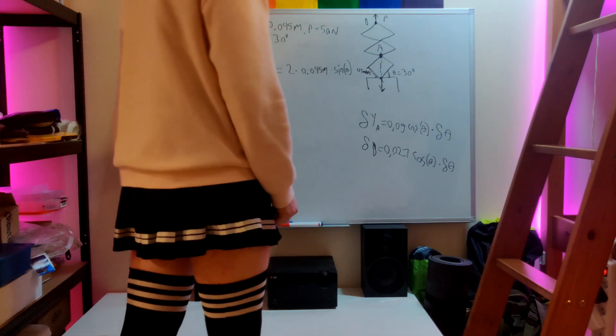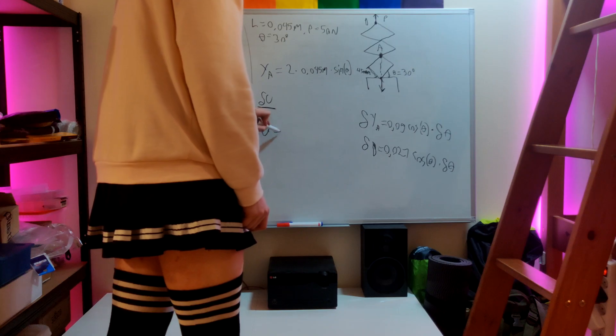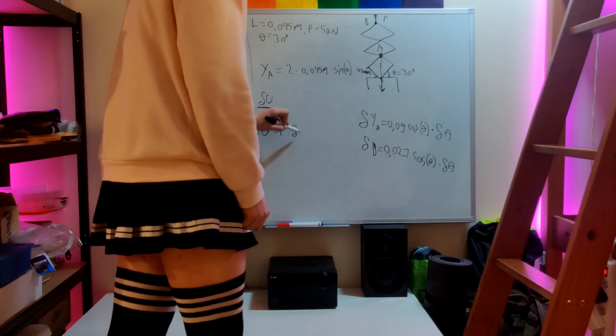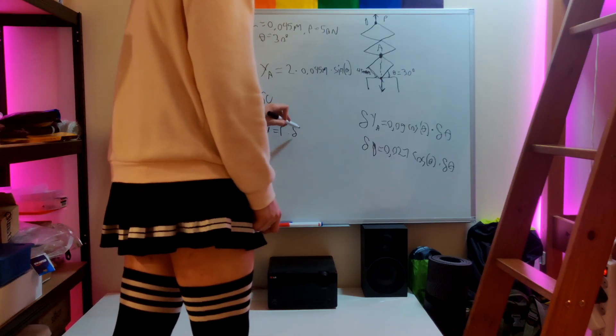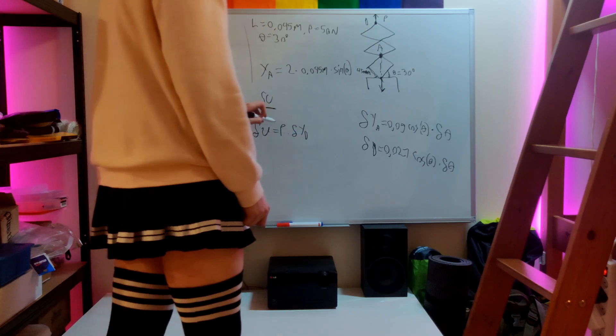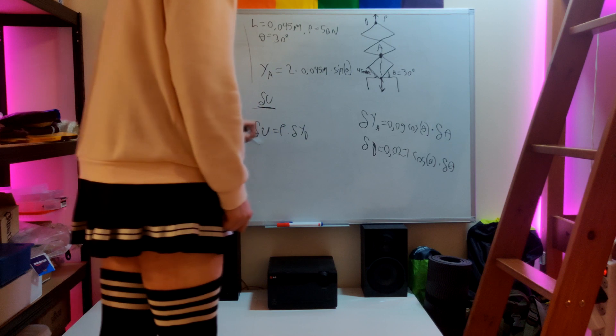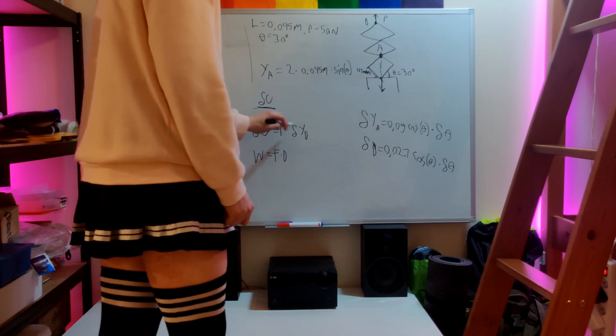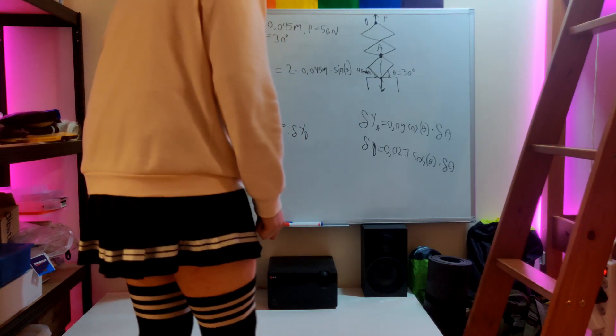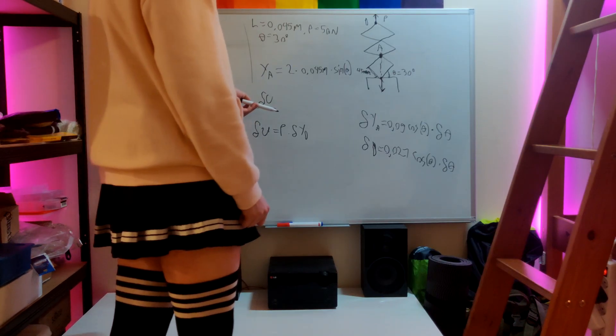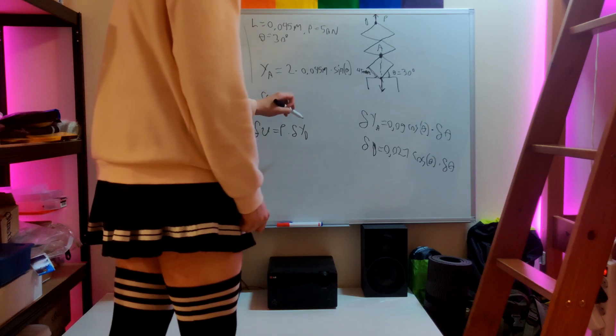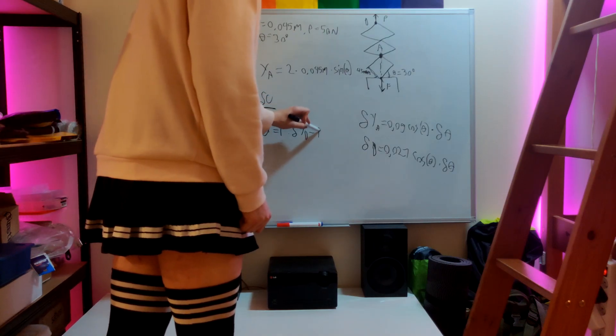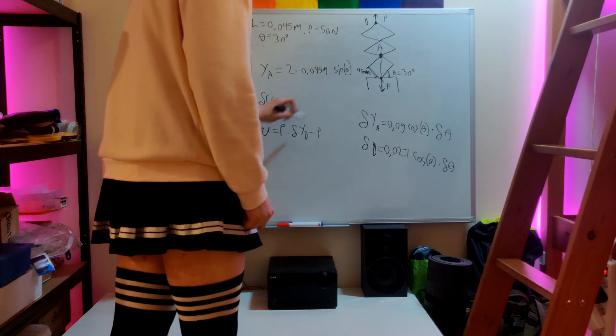This means that we can subtract the force times infinitely small change in distance of point D. This is basically the equation for work equals force times distance, but this is just with virtual work. And now because we want to find out the force F right here, we'll subtract the force times virtual movement of YA.